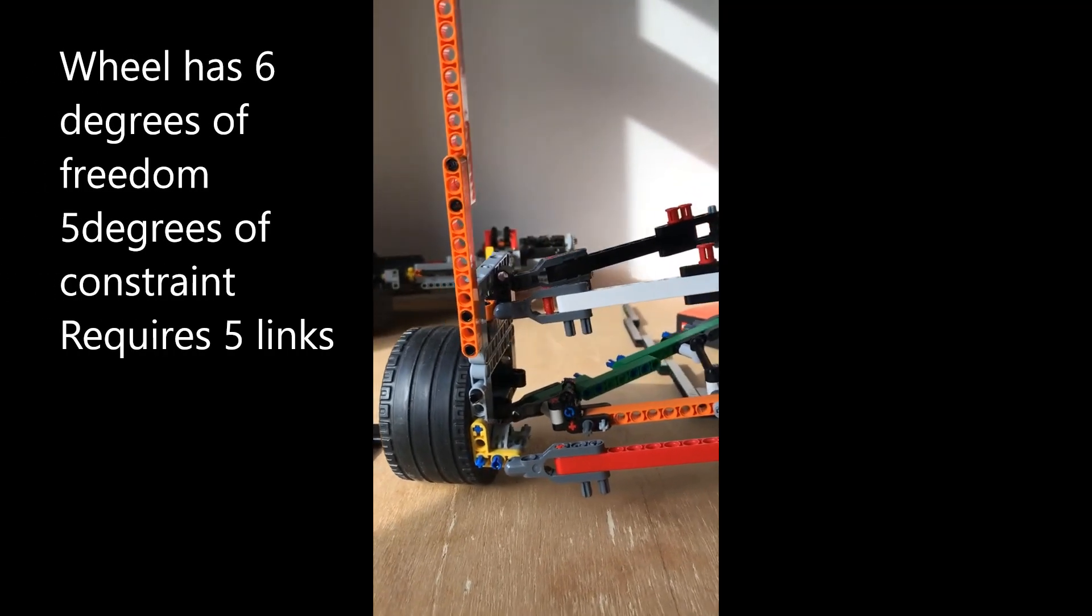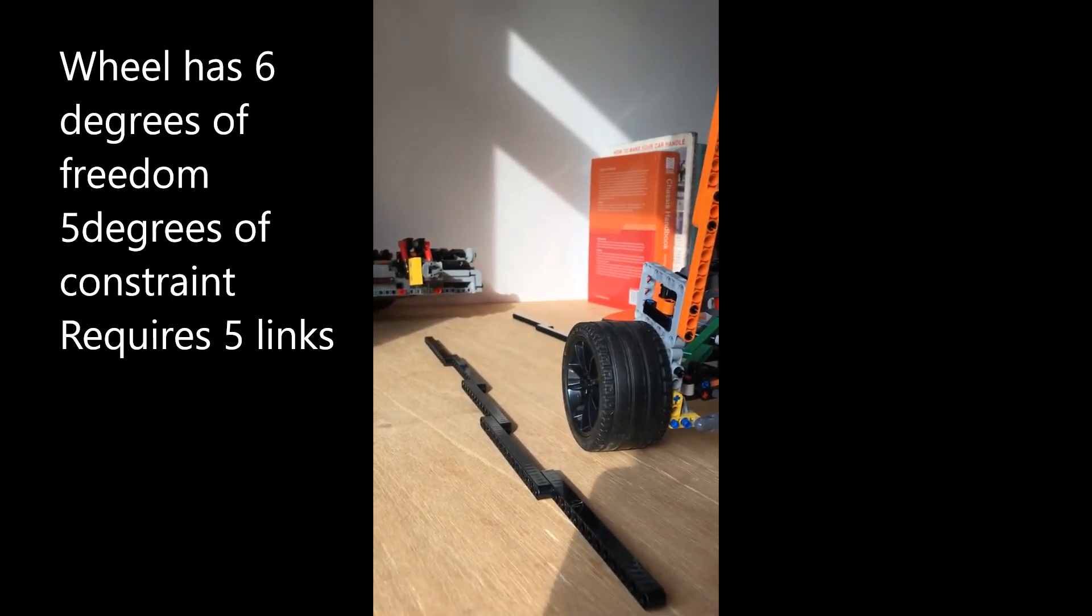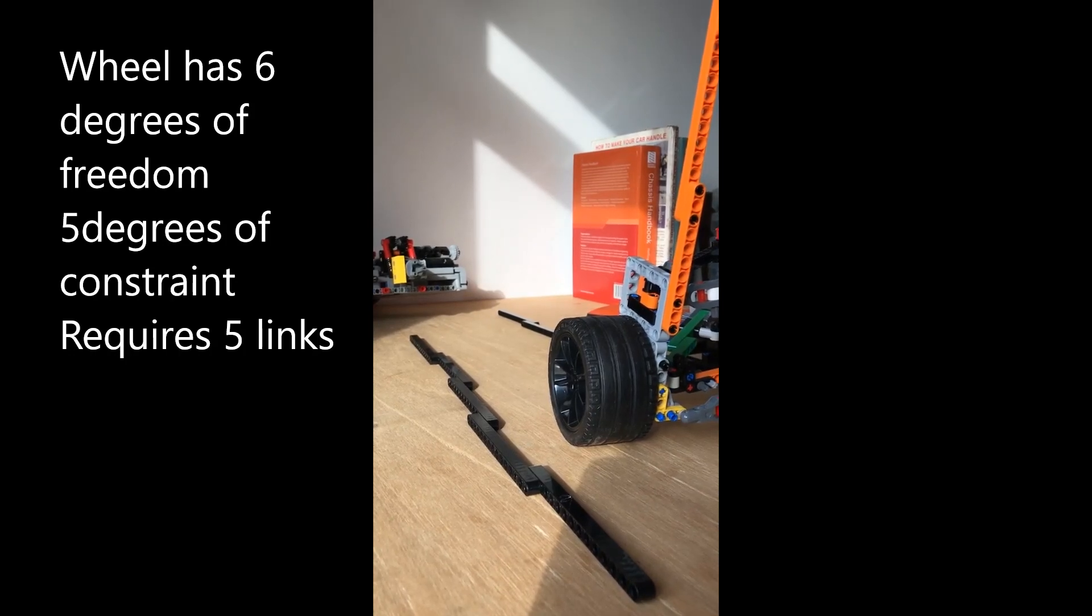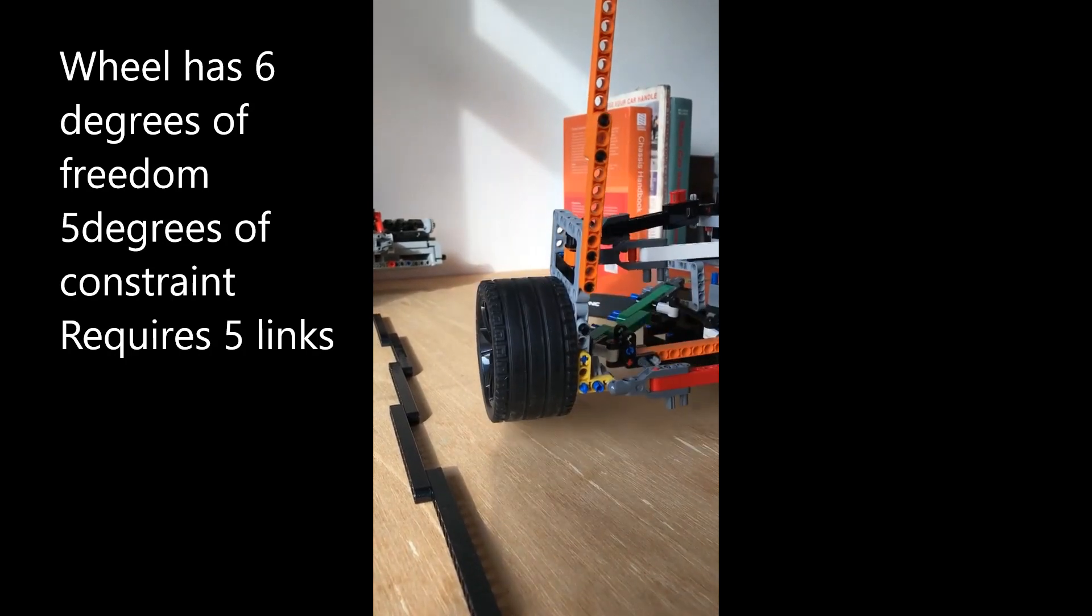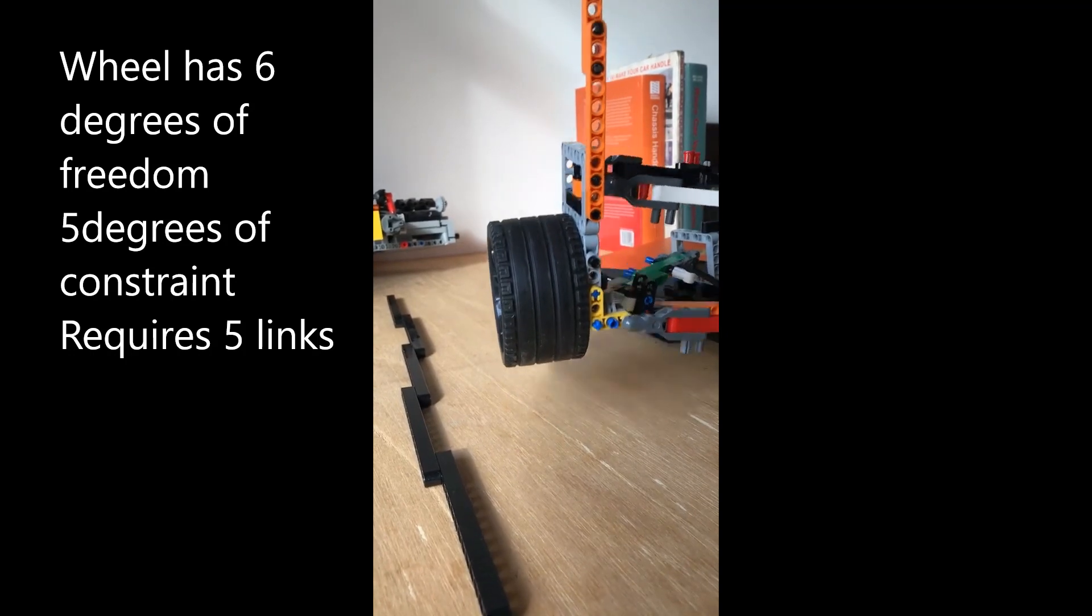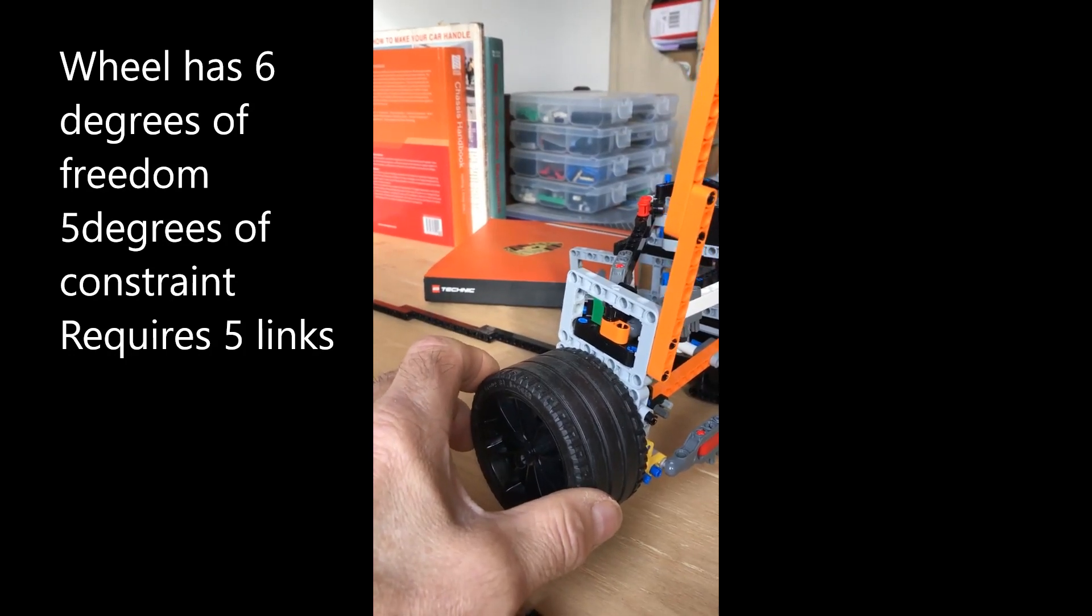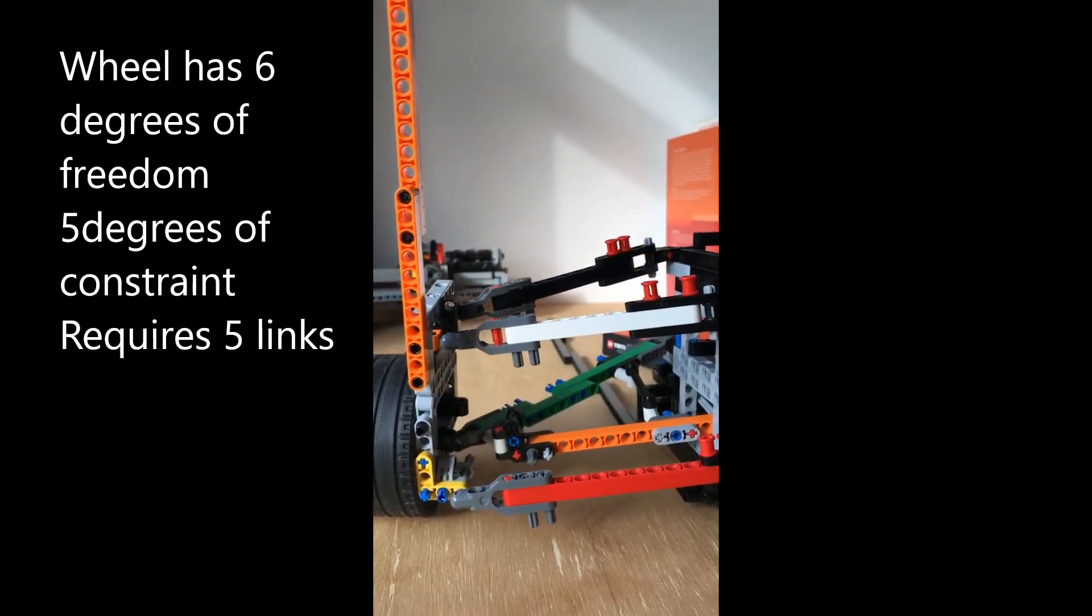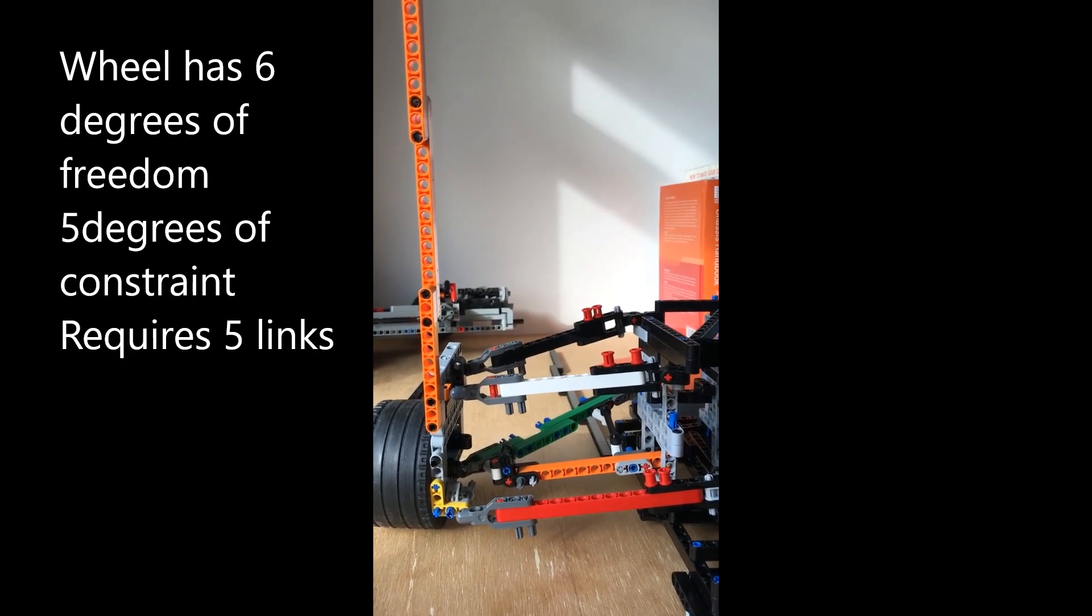Let's talk about degrees of freedom. The wheel has six degrees of freedom, but we need to manage and control five of those degrees of freedom and allow one degree of freedom, which is in bump and extension position. We also have the freedom of the wheel to turn. In order to manage the five degrees of freedom we need five links.